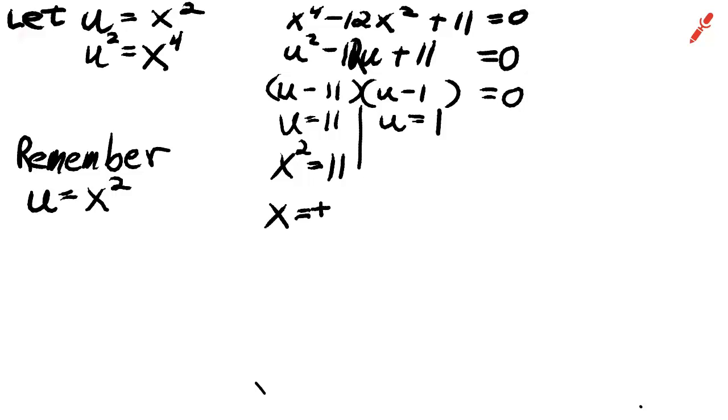If we take the square root of both sides, we find out that x equals positive or negative the square root of 11. And here on the right, we're going to have x squared equals 1. We'll take the square root of both sides. And very conveniently, the square root of 1 is just 1. So we have four solutions. Our highest power is 4.